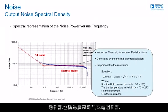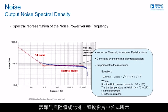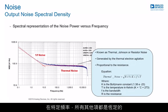Thermal noise is also known as Johnson noise or resistor noise. The noise is generated by the thermal electron agitation. This noise is proportional to the resistance as outlined by the equation on this slide. So at a particular frequency, all the other terms are constant, so the noise is proportional to the resistance.